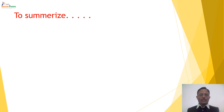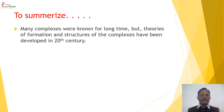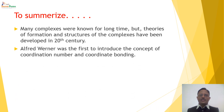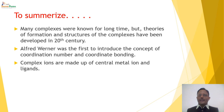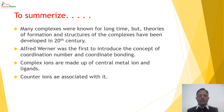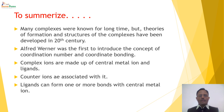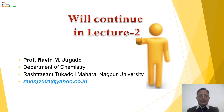To summarize this lecture: many complexes were known for a long time, but theories on complexes were developed in the 20th century. Alfred Werner was the first to introduce the concept of coordination number and coordinate type of bonding. Complex ions are made up of a central metal ion and ligands; counter ions are present outside the coordination sphere; and ligands can form one or more bonds with the central metal ion. This concludes the lecture on Introduction to Complexes; the remaining topics will be covered in lectures 2, 3, and 4. Thank you.